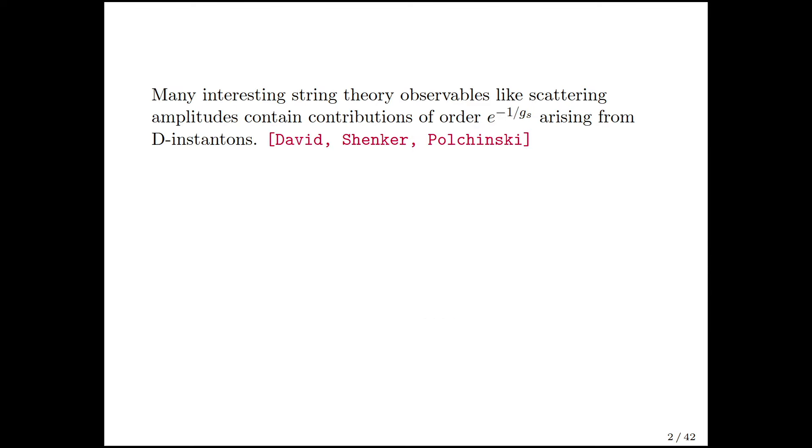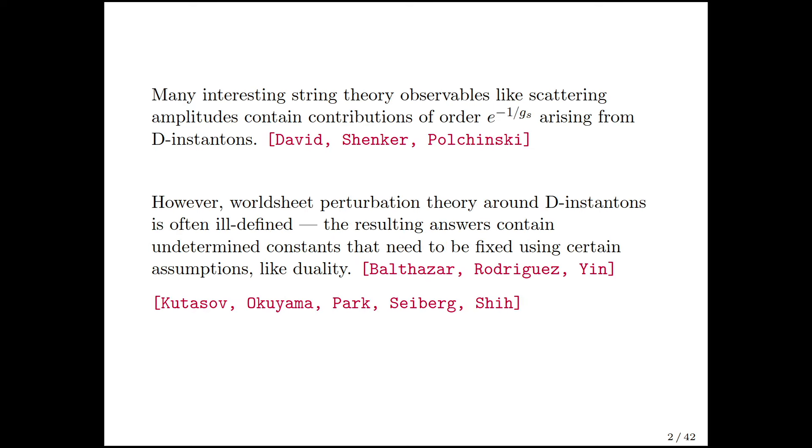Many interesting string theory observables like scattering amplitudes contain contributions of order e to the minus 1 over g string arising from D-instantons. However, if you just do worldsheet perturbation theory around these D-instantons, it's often ill-defined, and the resulting answers contain some undetermined constants that need to be fixed using certain other assumptions.